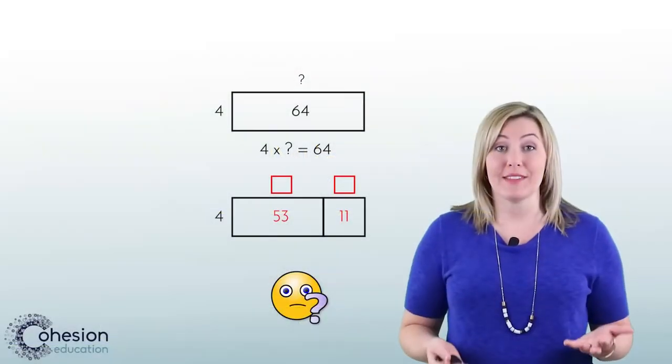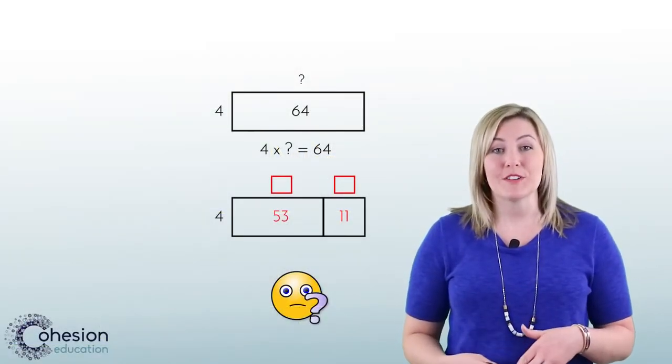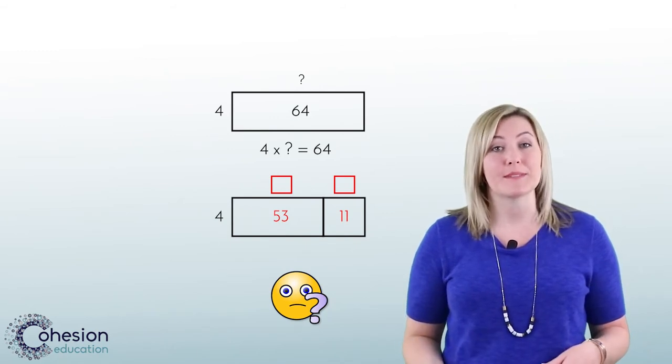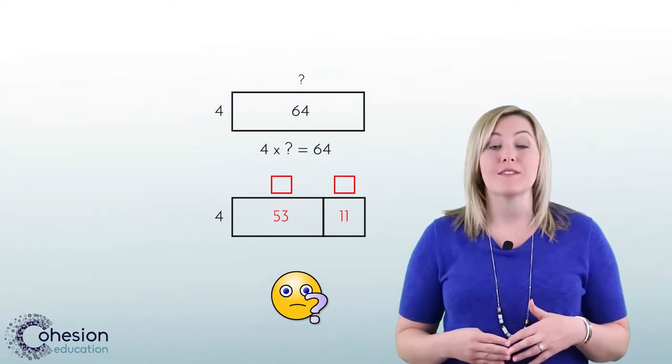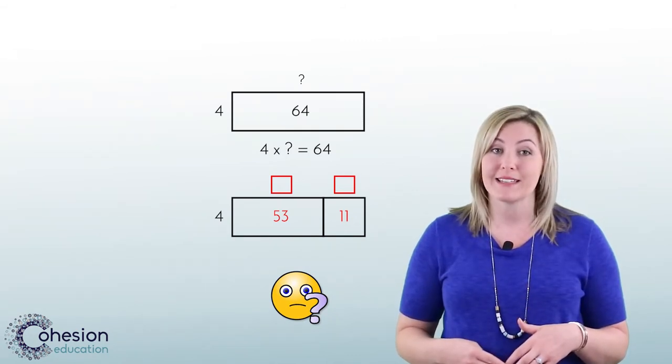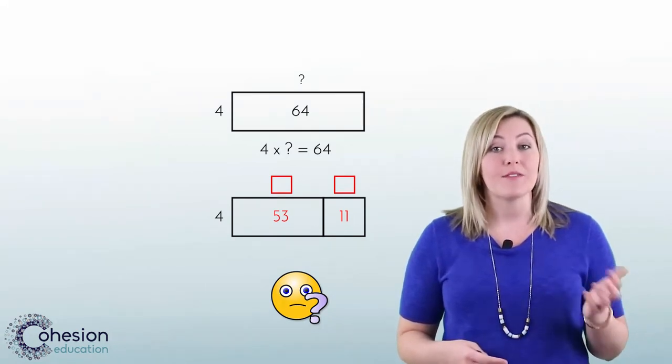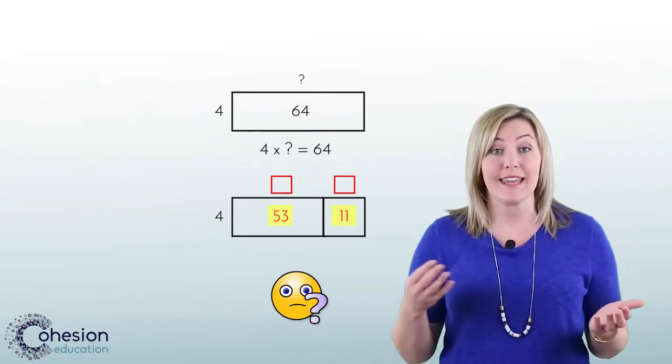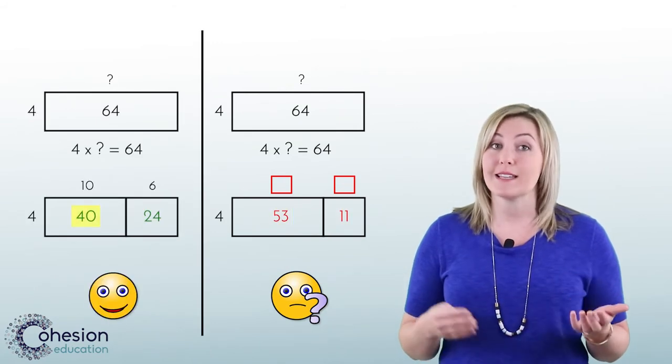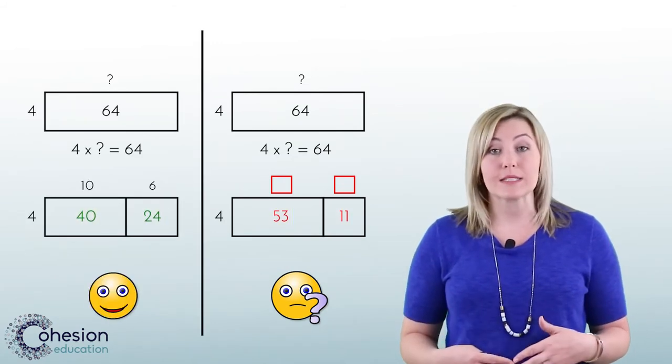A common error that occurs when students use the distributive property of multiplication to solve division problems is they may not split the larger number into two multiples of the number we are multiplying by. For example, if we look back to our first model, if a student split 64 into 53 and 11 instead of 40 and 24, this still equals 64, but since the numbers are not multiples of 4, it is not an efficient method to solving.